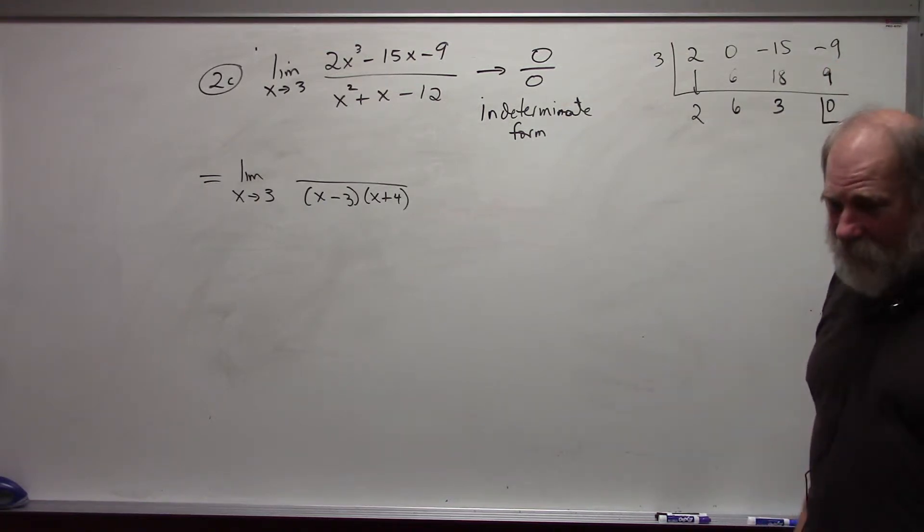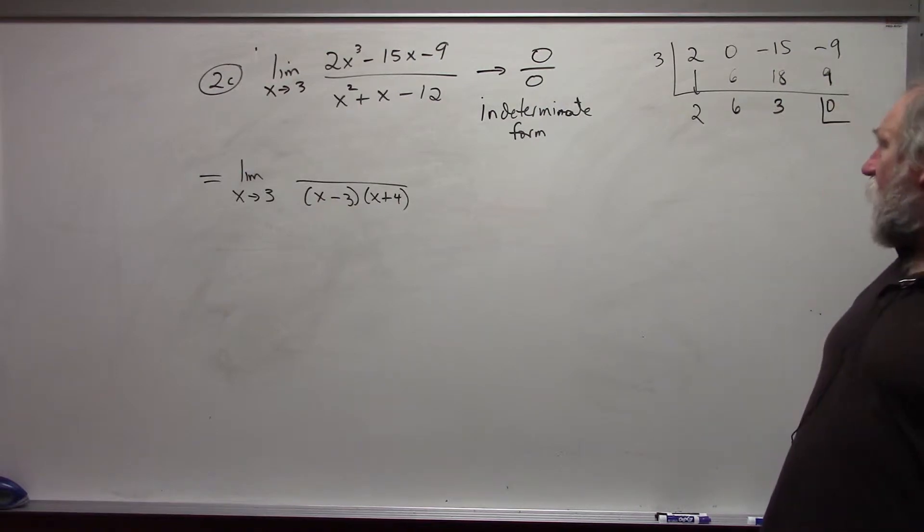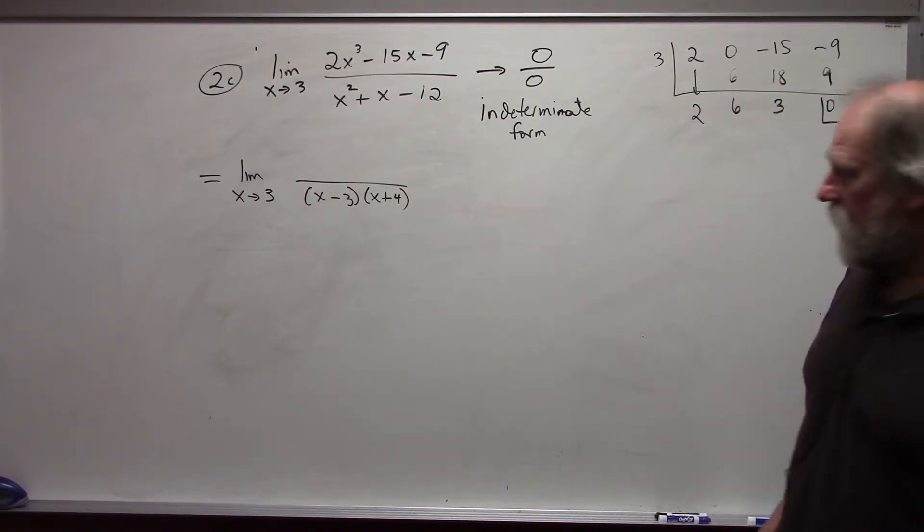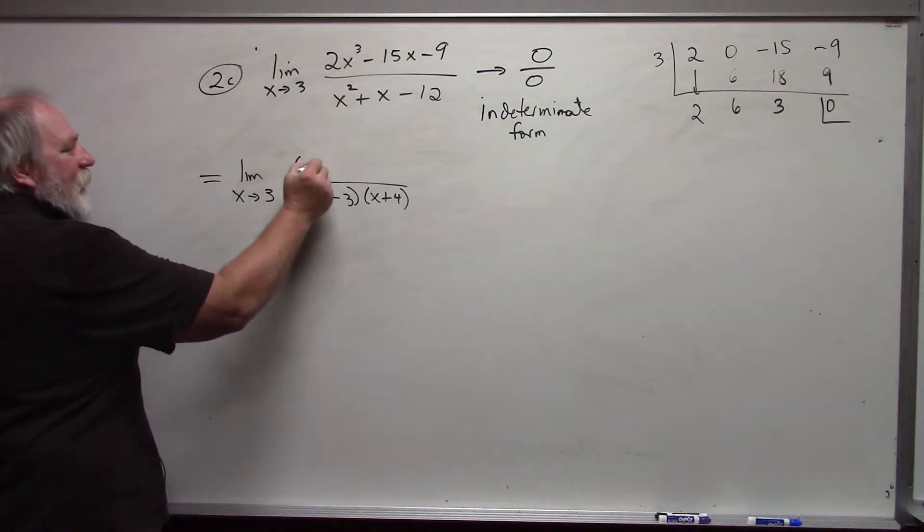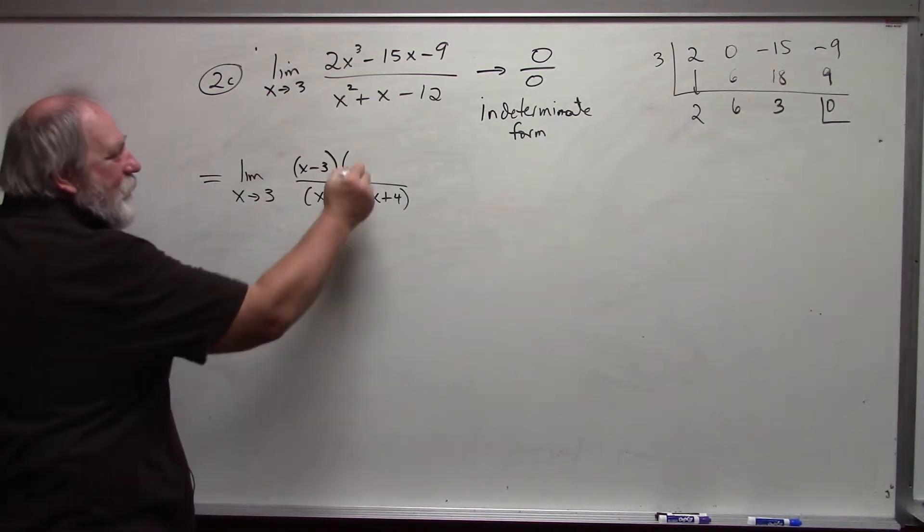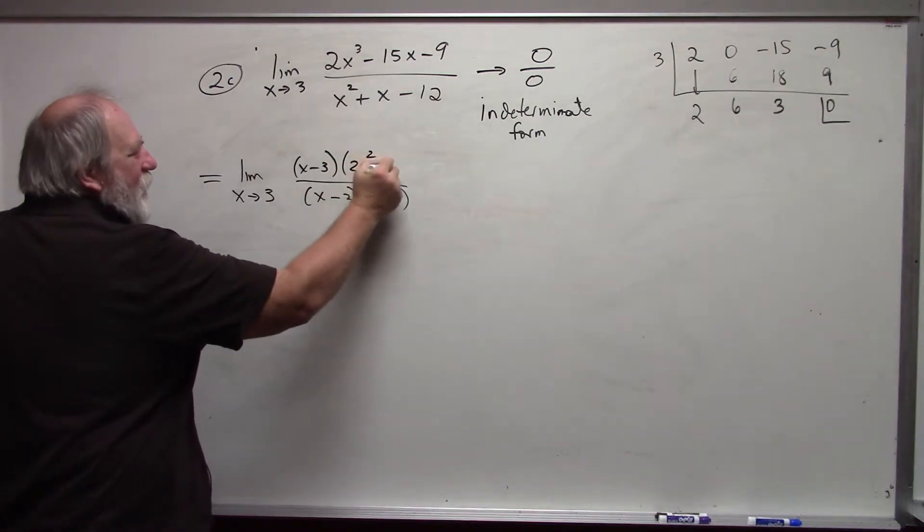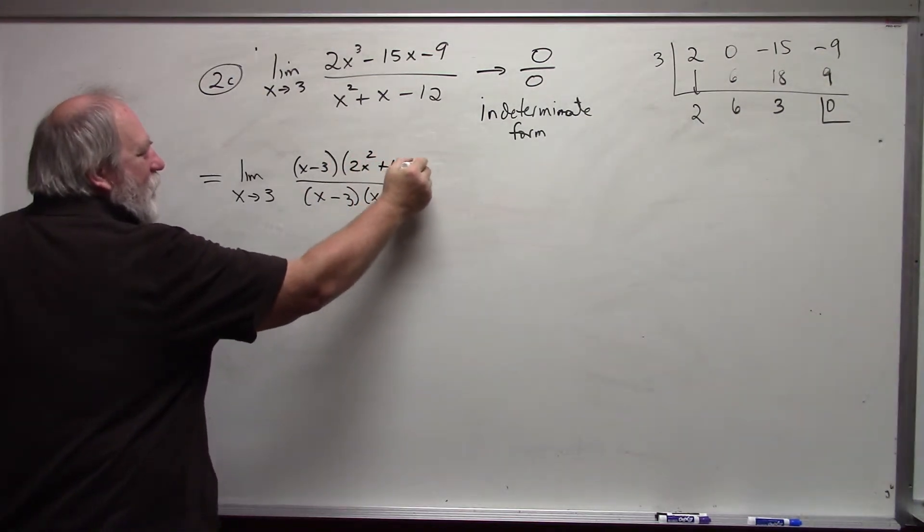That better be 0. That's the remainder. That means that x minus 3 is a factor. And so now, I can factor this as x minus 3 times 2x squared plus 6x plus 3.